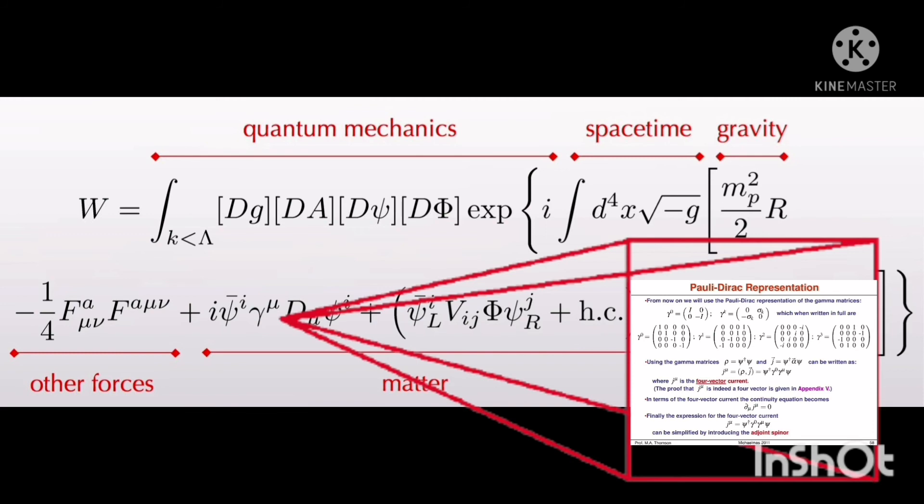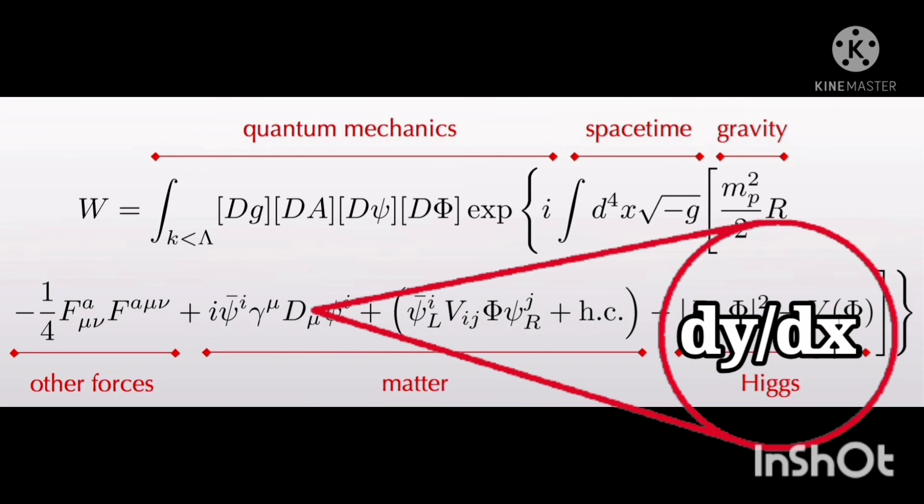D is a derivative like dy by dx, and represents the rate of change of the fields minus D mu psi to the second power minus V psi.